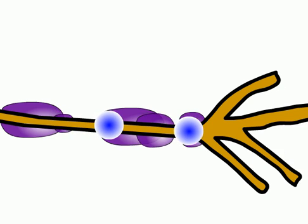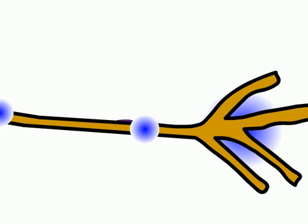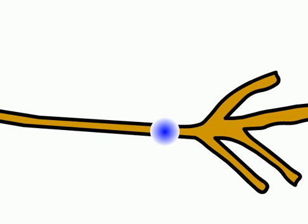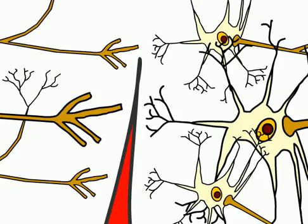If the myelin sheath is destroyed, as with multiple sclerosis, transmission of an action potential slows, because it is forced to spread down the entire axon. When nerve transmission is interrupted, as with spinal cord injury, the brain cannot communicate with the muscles.